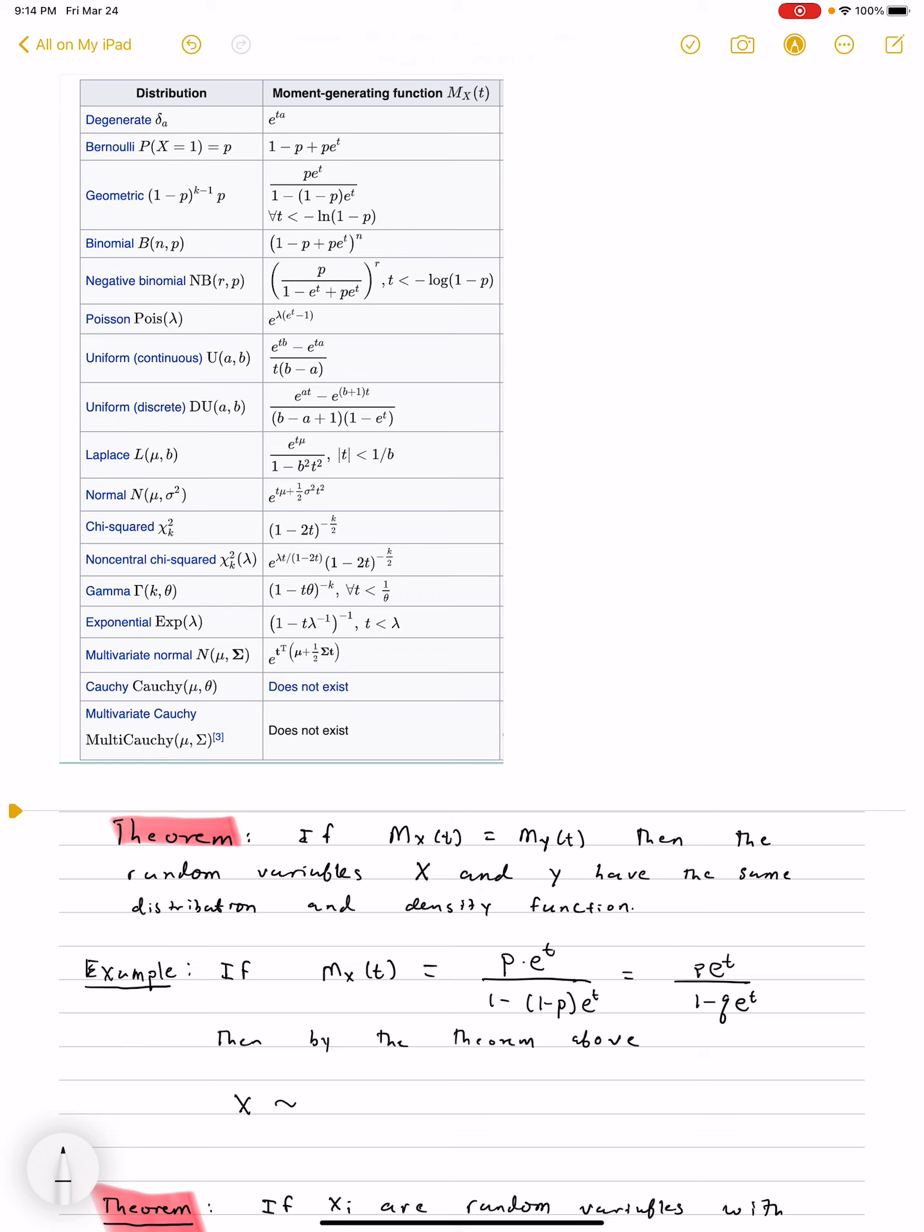Because it has a moment generating function that corresponds to a geometric distribution, we know that X has to be geometric.